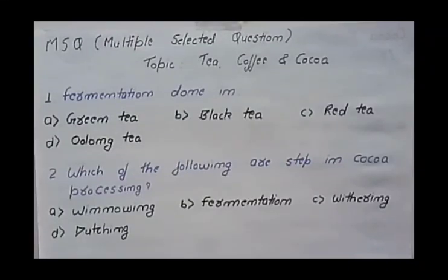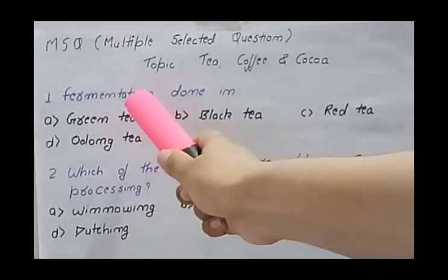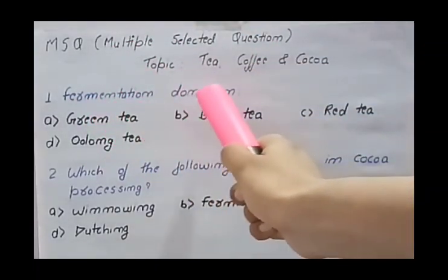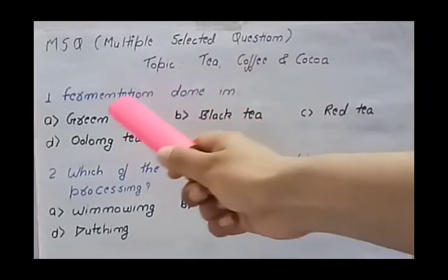Hello everyone, welcome back to my channel. In this video we are going to discuss some MCQ topics on tea, coffee and cocoa. Let's begin with the first question: fermentation is done in which of the following? The options given are green tea, black tea, red tea, and oolong tea.